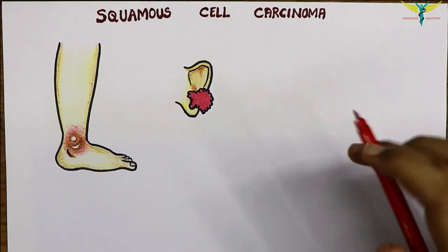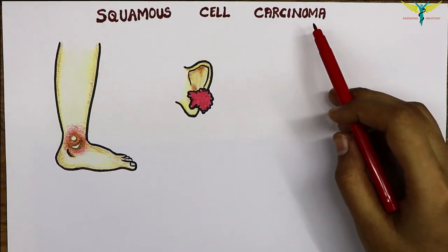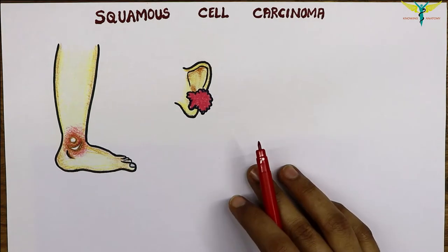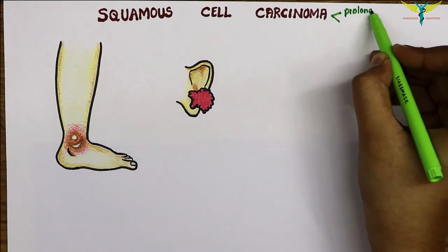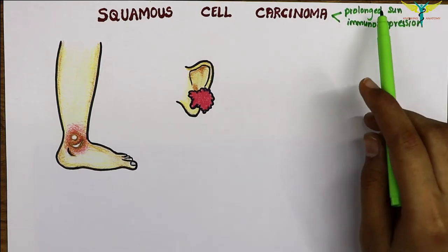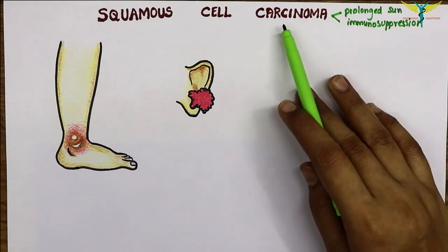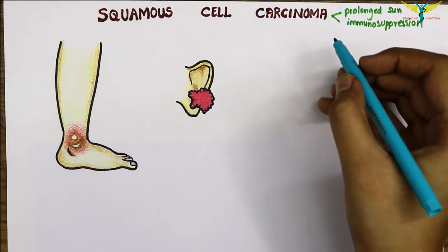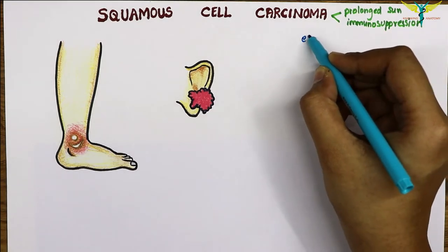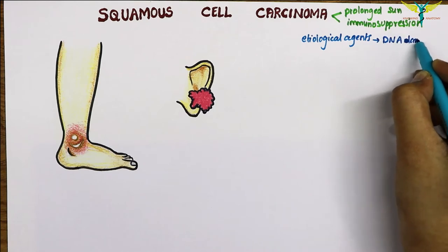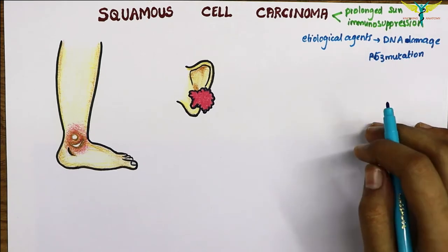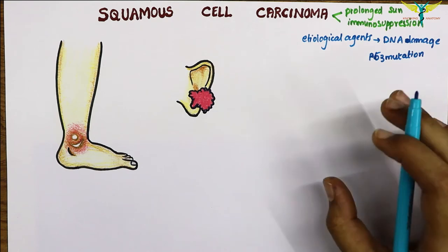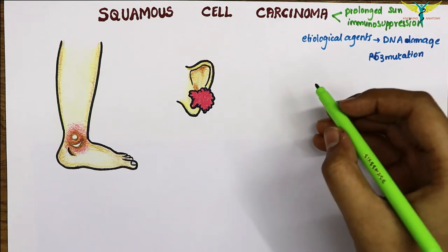In this video, let's talk about squamous cell carcinoma. It is mainly caused by prolonged sun exposure or immunosuppression — these two are the main pathogenesis. The etiological agents include DNA damage, p53 mutation, and events that lead to dysregulation of the signaling pathway.